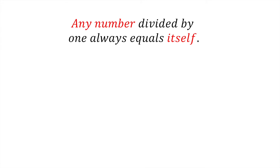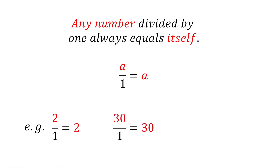The fourth fraction rule that we need to know is any number divided by 1 always equals itself. In other words, A divided by 1 equals A. For example, 2 divided by 1 is 2, 30 divided by 1 is 30, 100 divided by 1 is 100, and so on.